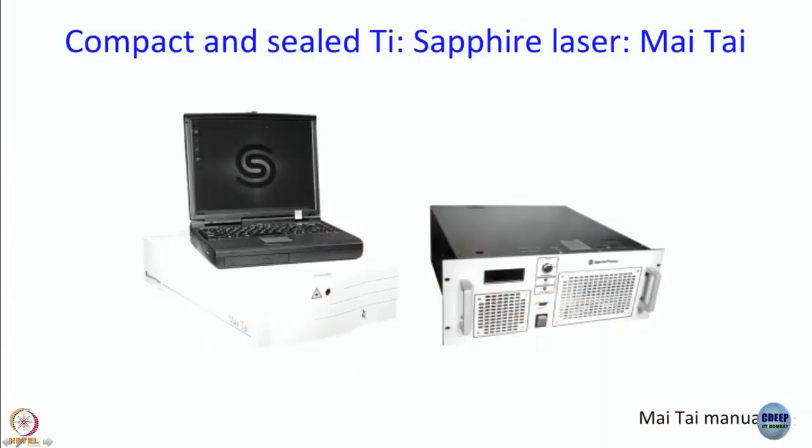A natural question about these compact sealed lasers is: how is cavity length maintained in such a small package? The answer is that the Ti:sapphire crystal and two large mirrors are arranged so that the light bounces off the mirrors many, many times. Even though the physical mirror separation is small, the effective optical path length is the same as in the Tsunami. That is how compact sealed lasers like the Mai Tai achieve mode-locked operation.